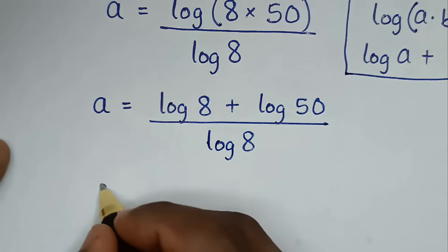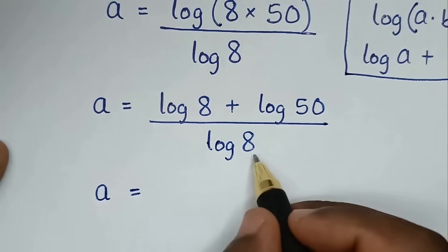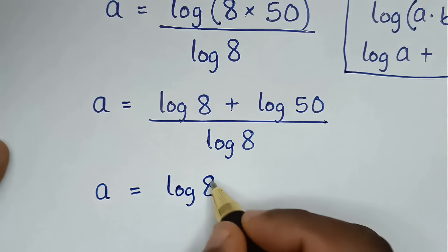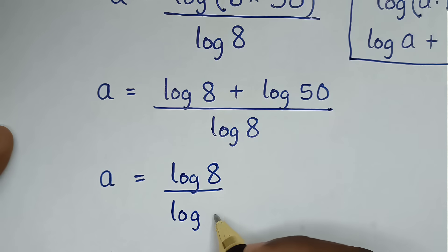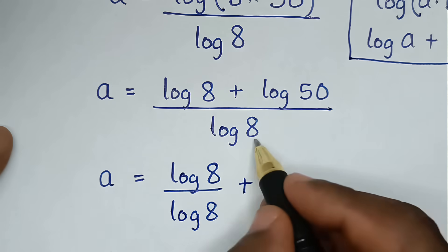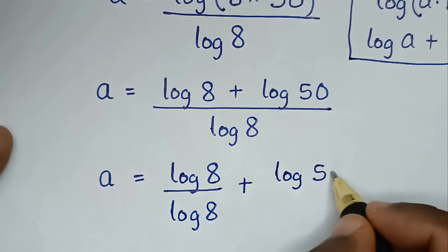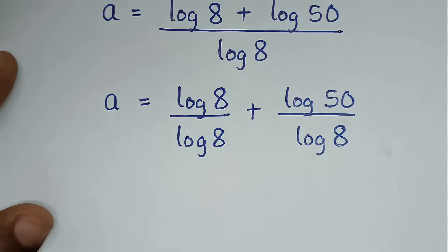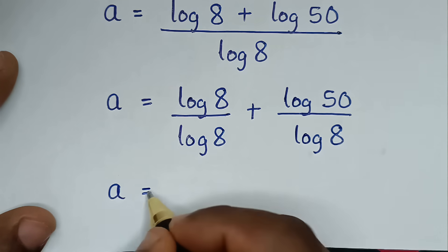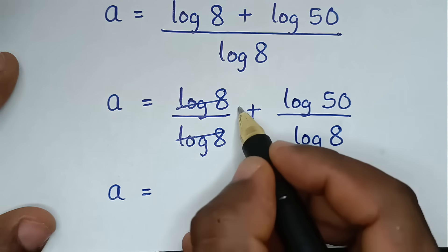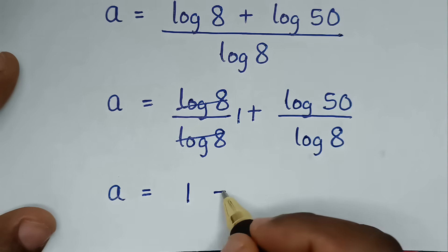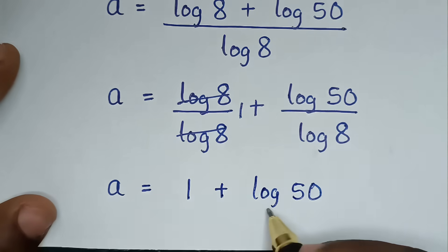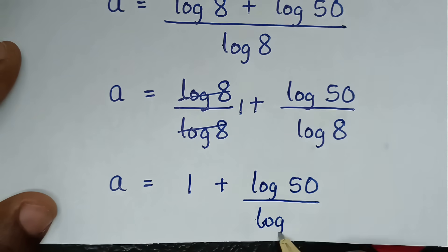Then, in the next step, we will divide by log of 8 in this part and this part. So it will be log of 8 over log of 8, plus log of 50 over log of 8. Then, log of 8 divided by log of 8 is 1, so it will be 1 plus log of 50 over log of 8.